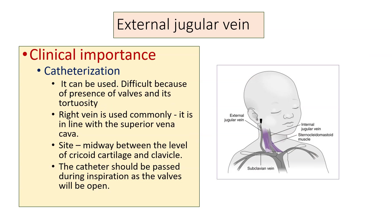The external jugular vein can also be used for catheterization, though it is difficult to pass the catheter because of the presence of valves and the tortuosity of the vein. In external jugular vein catheterization, the right vein is commonly used because it is in line with the superior vena cava. The site of catheterization is midway between the level of the cricoid cartilage and the clavicle. The catheter should be passed during inspiration, at which time the walls will be open.